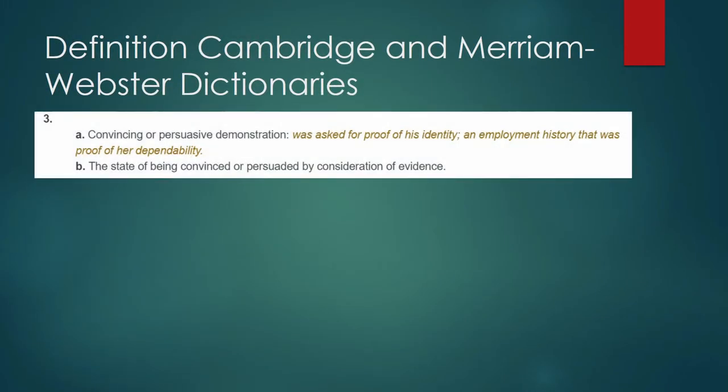I opened Cambridge and Merriam-Webster dictionaries, and these are the definitions of proof that I saw. It is a convincing or persuasive demonstration. If the security guard accosted you entering the premises of the university, he would say, who are you? You cannot enter. But then you would say, I am a student of this school. And then the guard will demand a proof. Show me the proof, the guard says, and you will show your school ID.